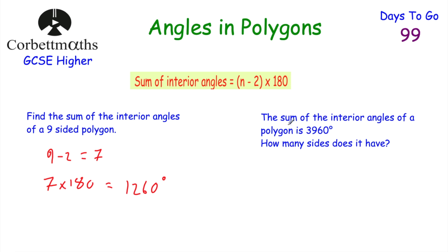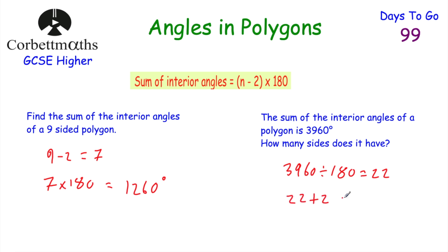Let's have a look at our next question. The sum of the interior angles of a polygon is 3960 degrees — find how many sides it has. We work backwards: take 3960 and divide by 180, which equals 22. Then, since we normally subtract 2, we reverse that and add 2: 22 plus 2 equals 24 sides. So a 24-sided polygon has interior angles that add together to be 3960 degrees.